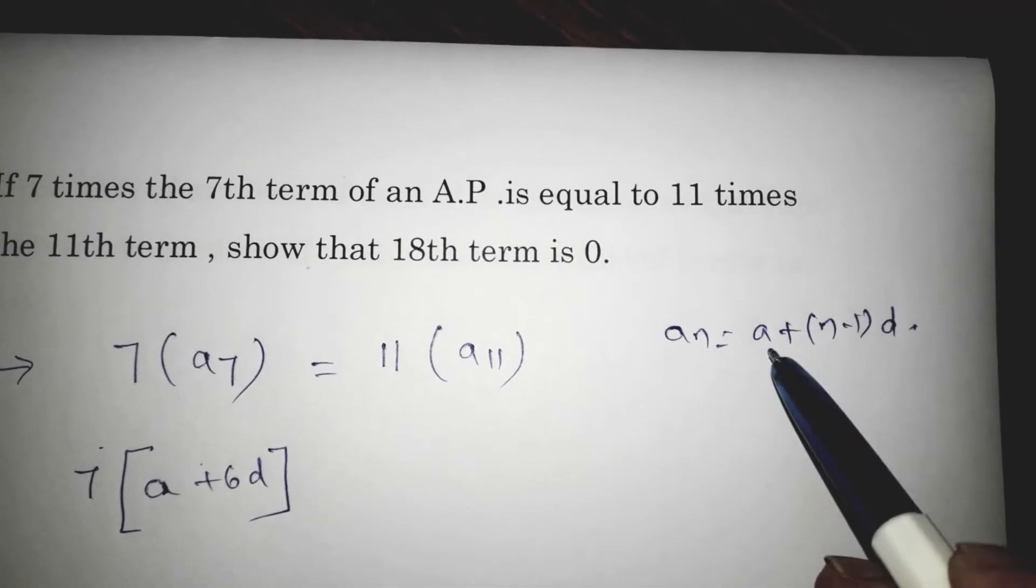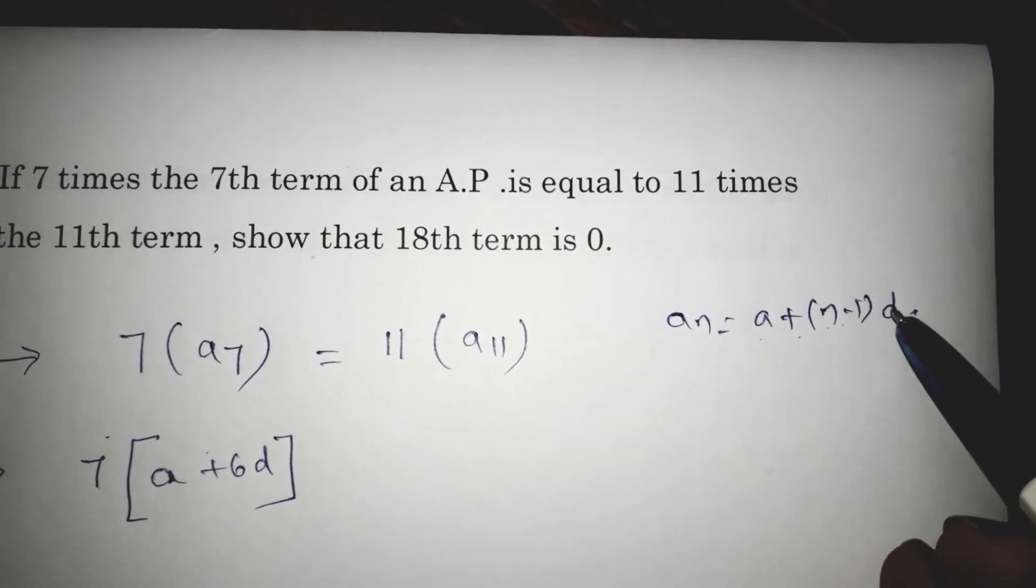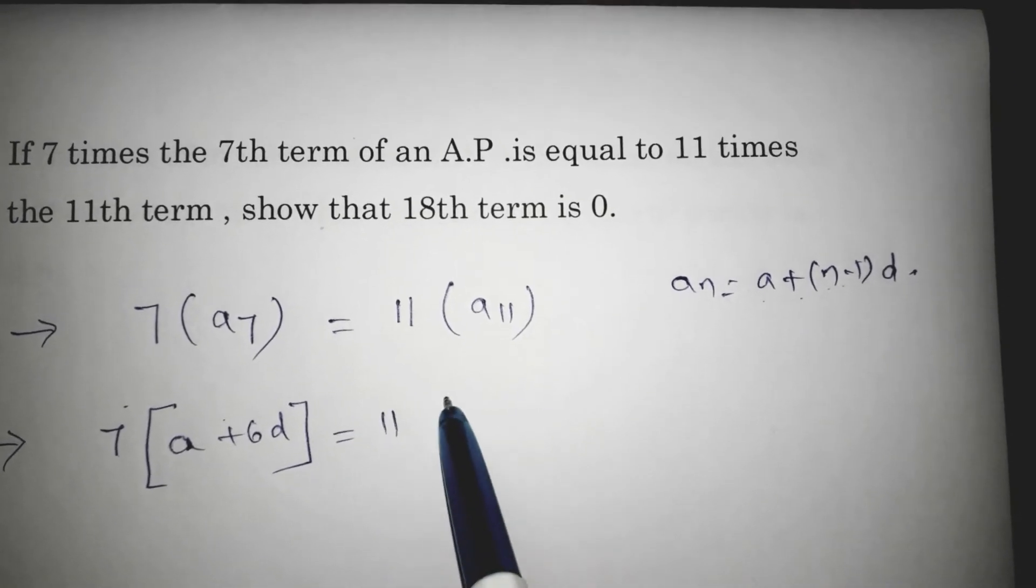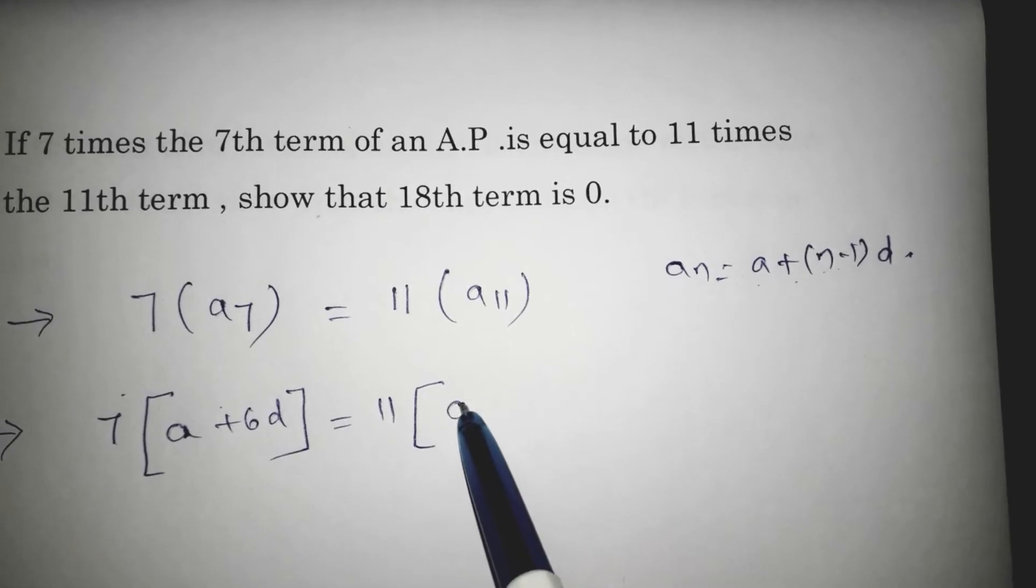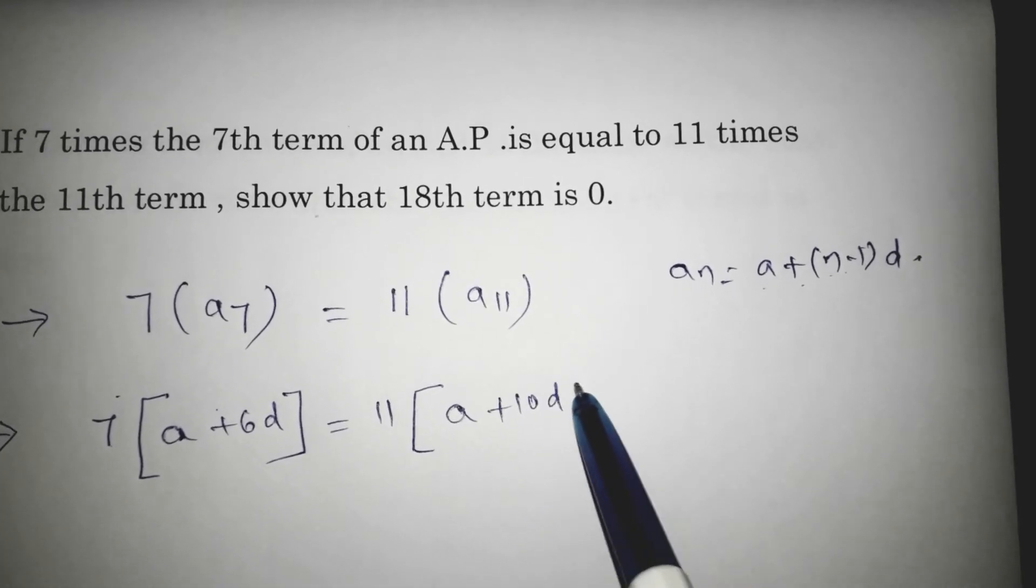A_7 is a plus (7 minus 1) times d. In the same way, 11 times the 11th term. The 11th term is a plus 10d.